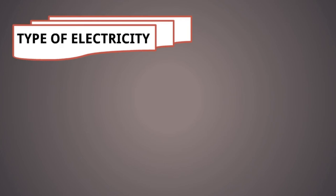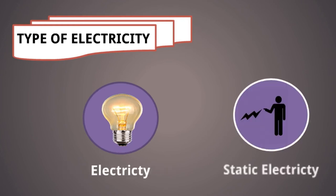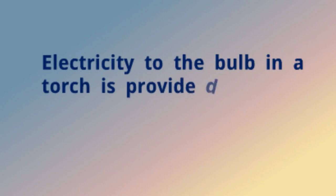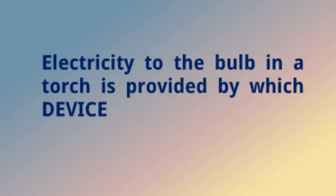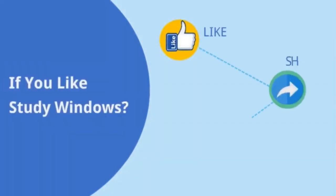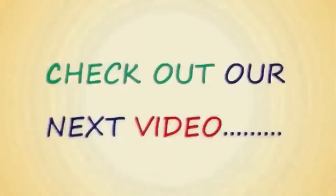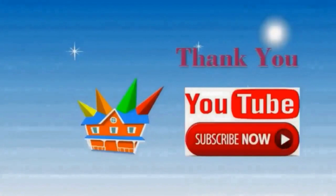One is dynamic electricity or normal electricity, and another one is static electricity. Now do you know which device provides electricity to the bulb in a torch? Check out our next video. If you like Study Windows, please like, share, and don't forget to subscribe to my channel. Thank you so much and stay tuned.